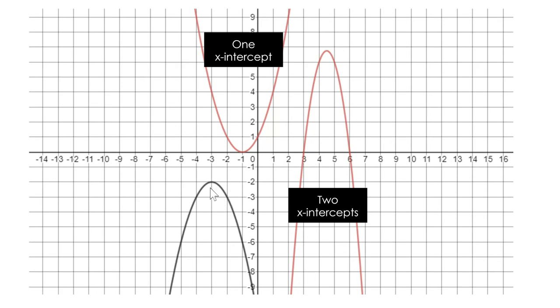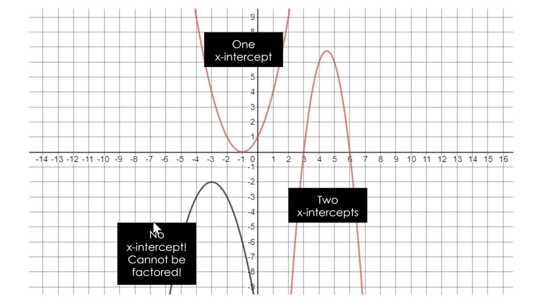Finally, this one, we can write this one in standard form. We can also write it in vertex form. You can see your vertex. You can figure out that your a value is 1, but it has no x-intercepts so it cannot be factored. Just keep that in mind that not all quadratics can be factored.